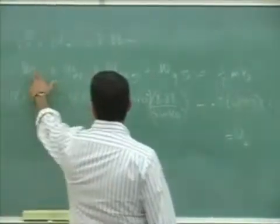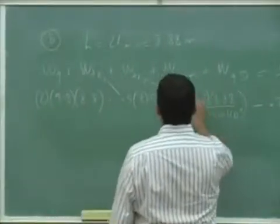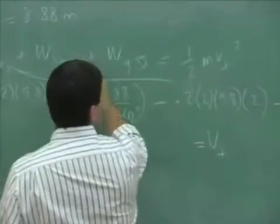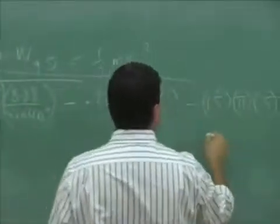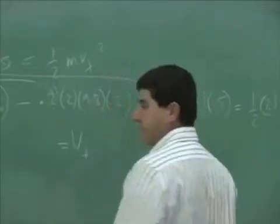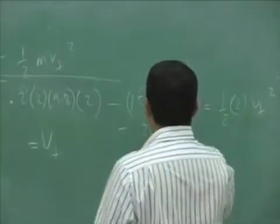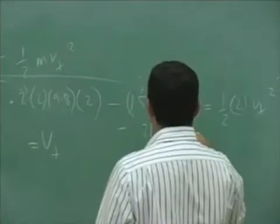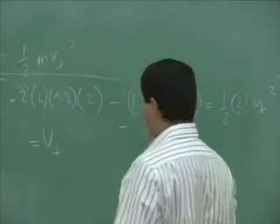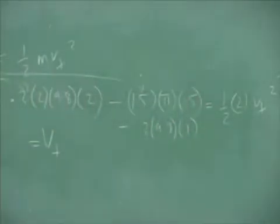This one was this one, this one was this one. The work of gravity — minus the work of gravity was two times 9.8 times double the radius, which is 1 meter. So everything on the left side is negative.